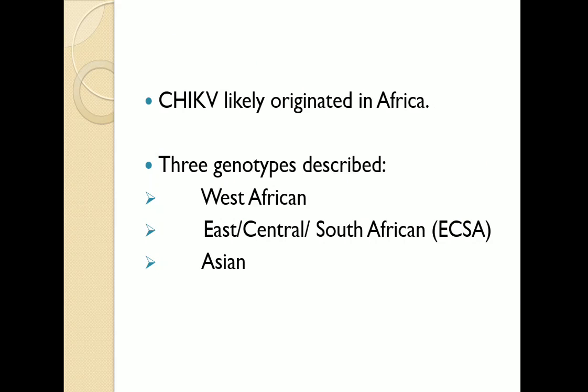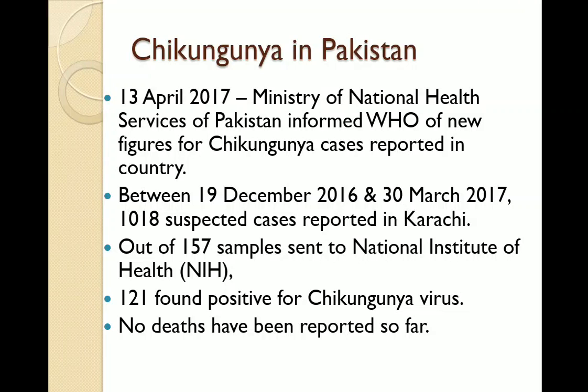The spread beyond Africa started in the early 18th century. The introduction of chikungunya into Asia occurred in the 19th century. While the disease typically occurs in Africa and Asia, outbreaks have been reported in Europe and America since 2000. In 2014, more than a million suspected cases occurred. In April 2017, the Ministry of National Health Services of Pakistan informed WHO of new figures for chikungunya — 121 positive cases were found and no deaths were reported.